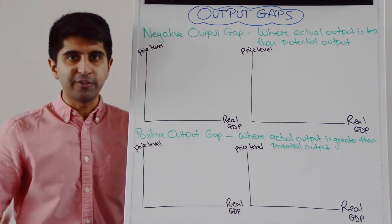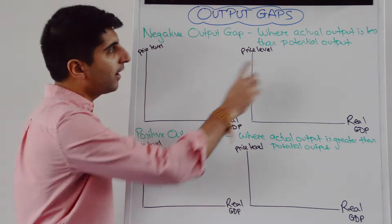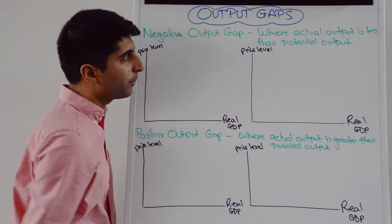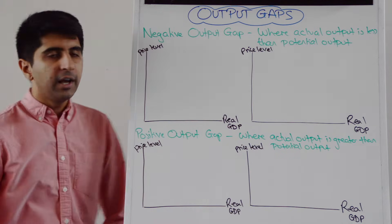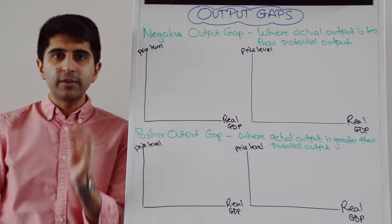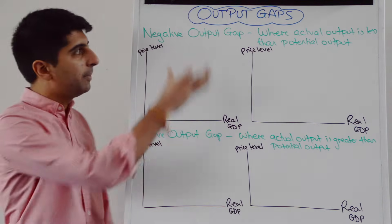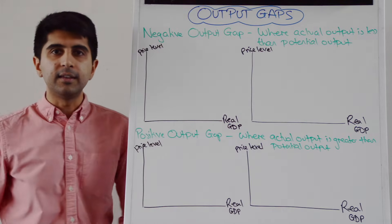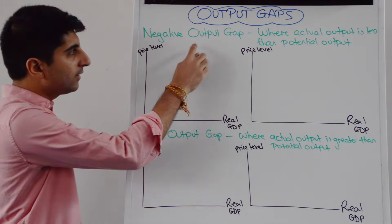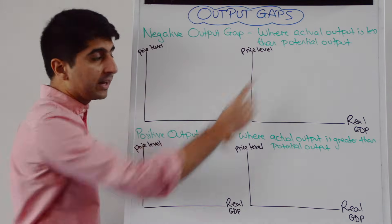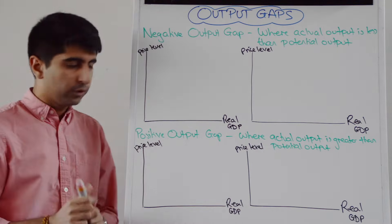Let's look at negative output gaps first. A negative output gap occurs anytime where actual output is less than the potential level of output. This is also known as a deflationary gap and also known as a recessionary gap, because you tend to see this when the economy is suffering from a recession. Let's look at the classical interpretation and the Keynesian interpretation of what a negative output gap would look like.